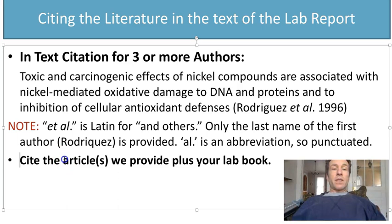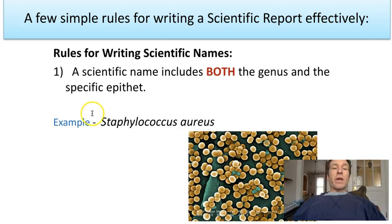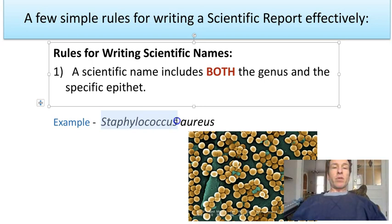For this particular lab report, you need to cite the articles that we provide for you on Blackboard, plus your lab book. When you write scientific names, remember that the first word is the genus — it is capitalized and italicized. The second word is the species epithet — it is lowercase but italicized. You will need to include the name of the yeast we are using as part of your lab report.